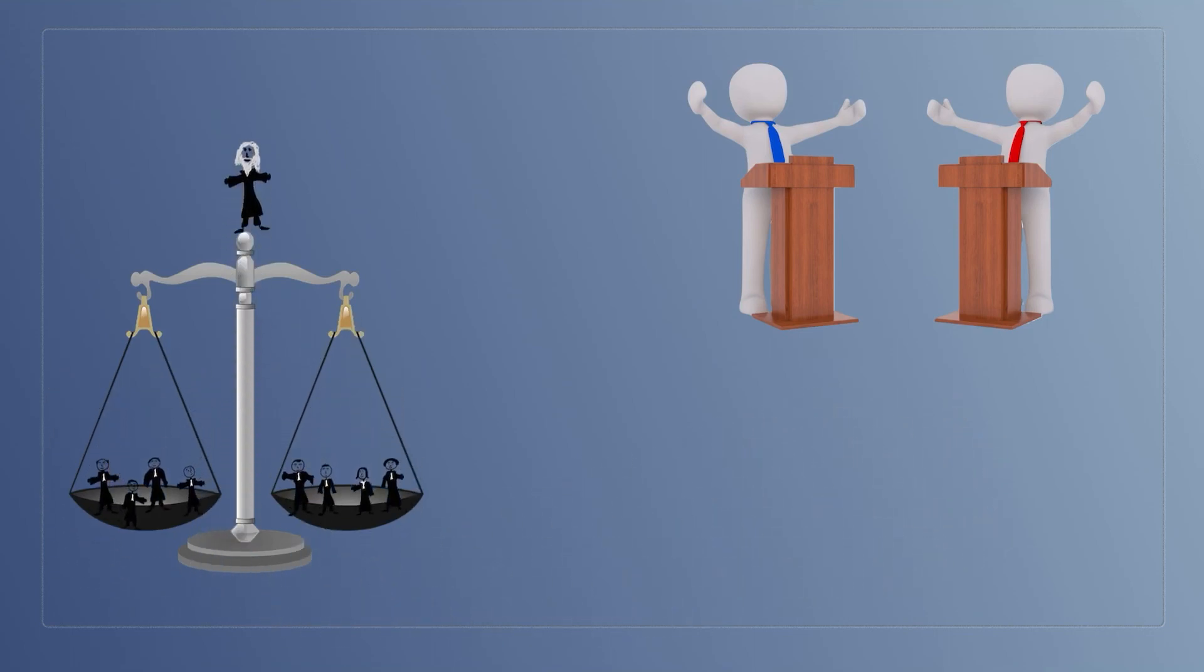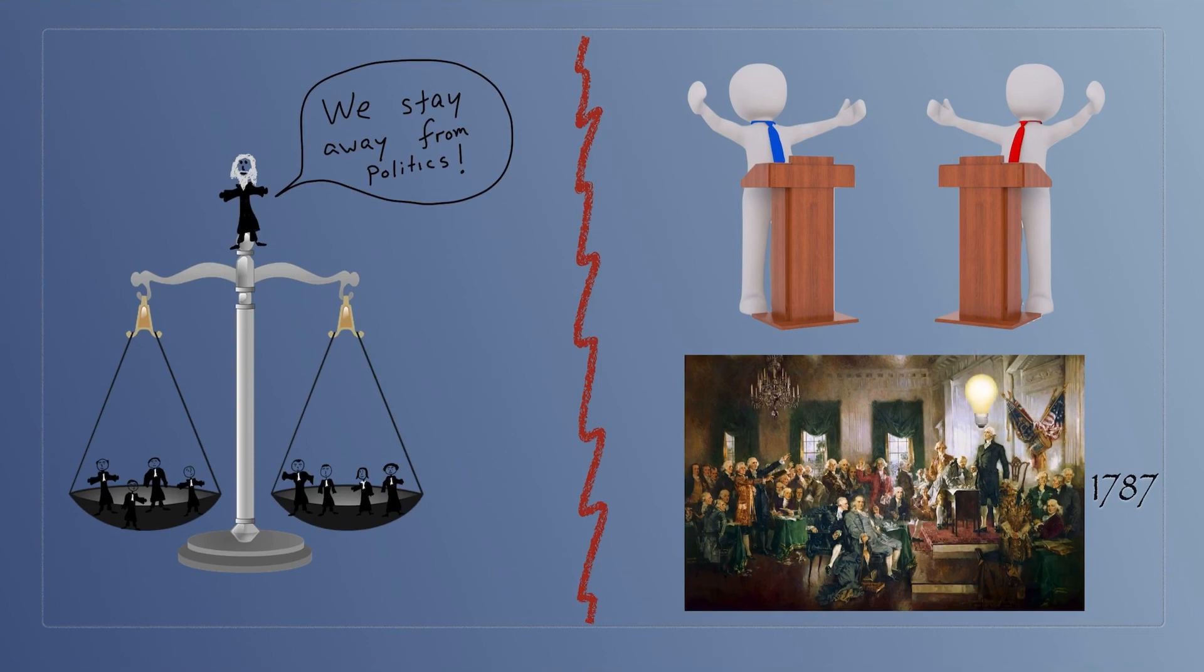We'd rather that the judges stay away from politics. So what they think is right or wrong should be what they think, not what the politicians tell them to think. So we want them to stay away from politics. And one way to do that is to have them be judges on the Supreme Court for their whole life. That's what the Constitution in 1787 described as a good way to do this and keep the courts away from politics.